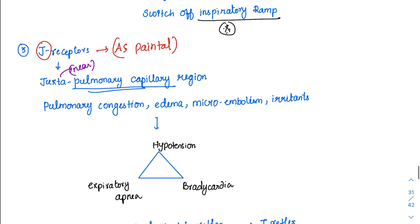And what is the stimuli for these J-receptors? The stimuli for these J-receptors is pulmonary congestion, edema, microembolism, or irritants. So whenever these J-receptors get activated,